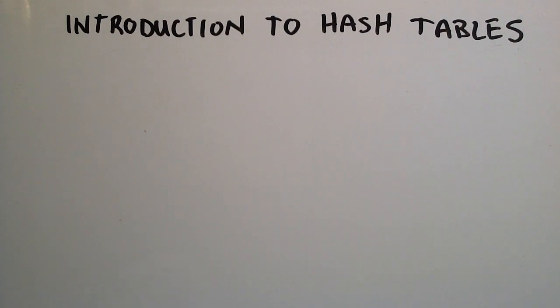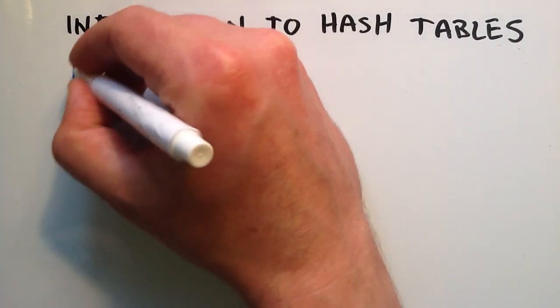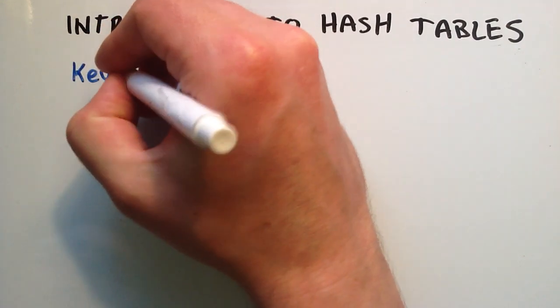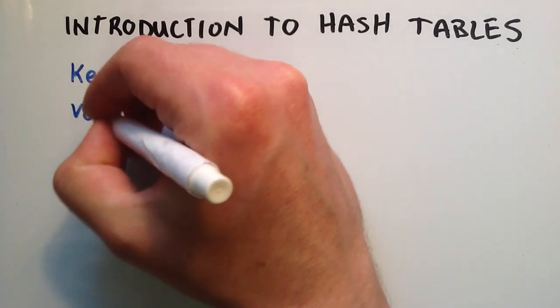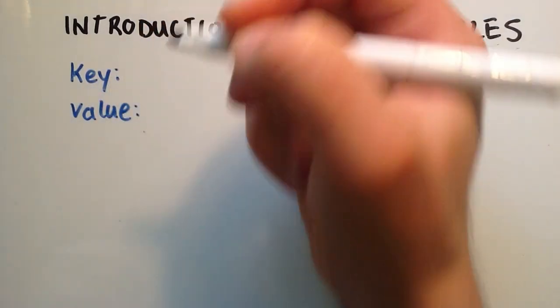Hey everybody, this is Paul. In this tutorial I'm going to do an introduction to hash tables. A hash table is a data structure that is used to store information. The information in a hash table basically has two main components: it's going to have some sort of key and then it's going to have some sort of value or record.